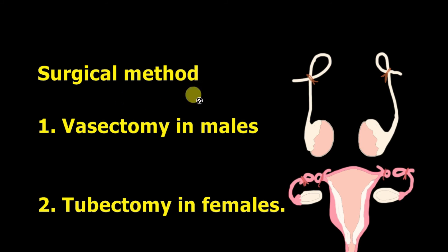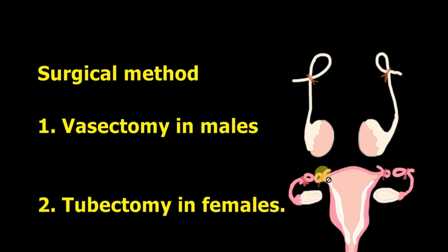The next method is the surgical method. In males, vasectomy is performed — the vas deferens is cut, folded, and tied so that sperm cannot move out, preventing fertilization. In females, tubectomy is done — the fallopian tube is cut, folded, and tied so that male and female gametes cannot meet in the fallopian tubes, controlling birth.